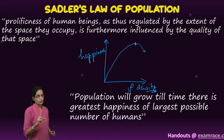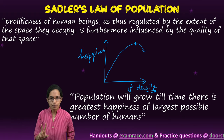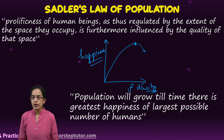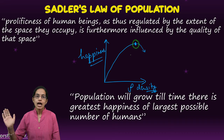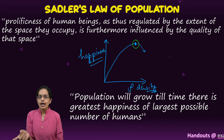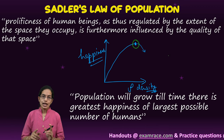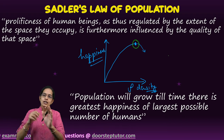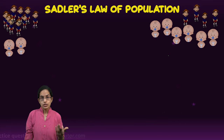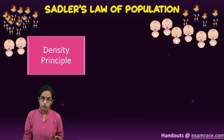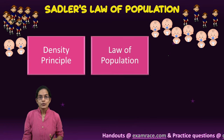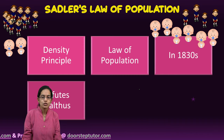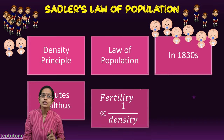He believed in two important aspects: prosperity and space. Prosperity, through the happiness component, would be seen till an optimum point of density is reached — beyond that, happiness would tend to decline. He also said that it is not the extent of space but the quality of space that matters for happiness. Based on these beliefs, Sadler refuted Malthus's theory and brought about his density theory, later written as the Law of Population in the 1930s.